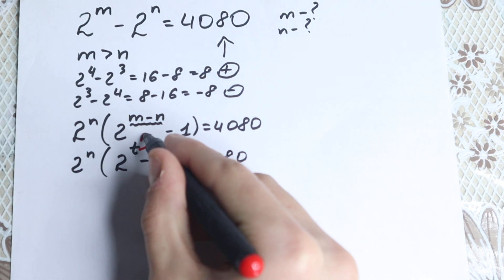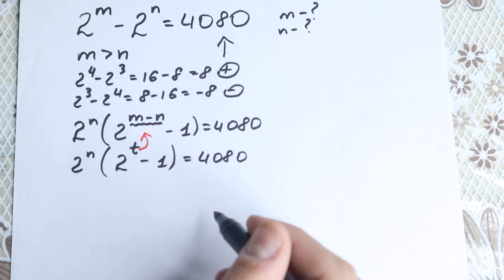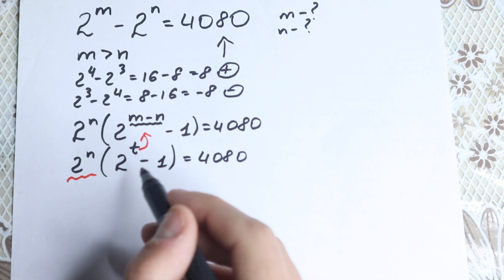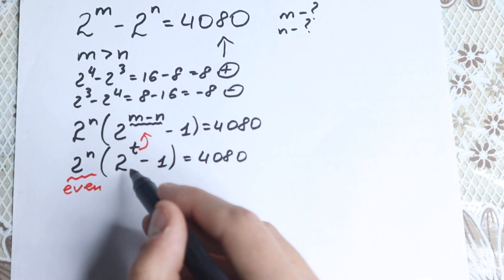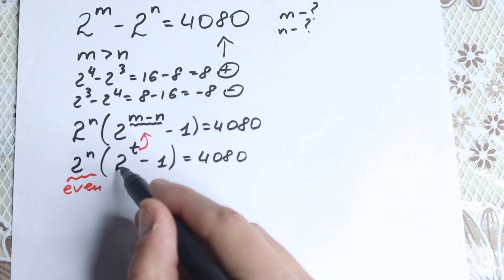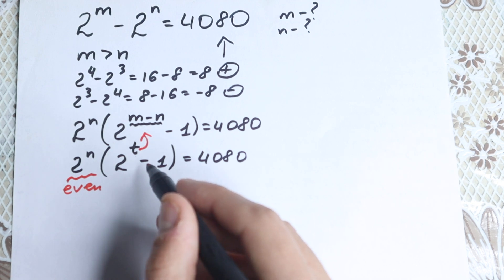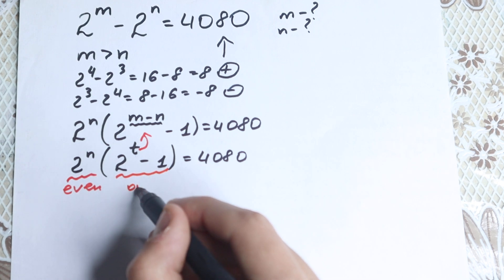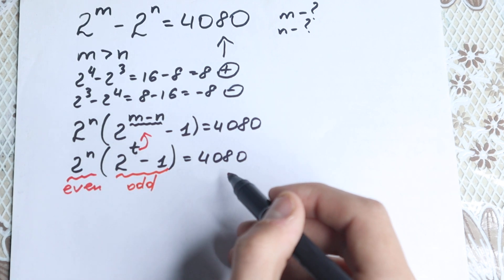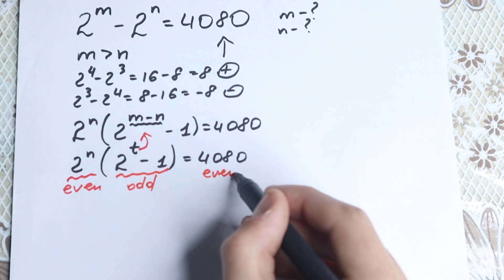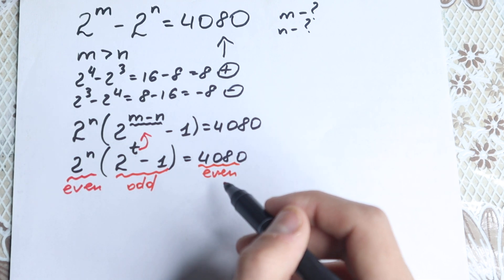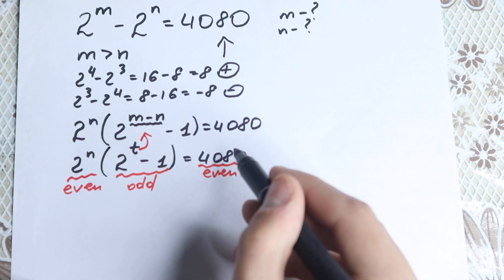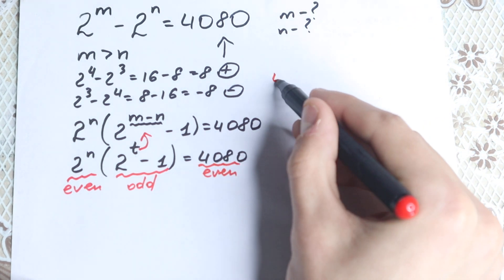Now, take a look. We have 2 to the power n, which is an even number, and 2 to the power t is also an even number. But if we subtract 1 from 2 to the power t, we get an odd number. So the factor 2 to the power t minus 1 is odd. And 4080 is of course an even number. So we have a product of an even number times an odd number equal to an even number. Let's try to factor 4080 to work with this.